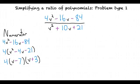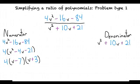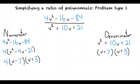So what do we do about the denominator? In regards to the denominator, the next step will be to factor it out. v² + 10v + 21 can be factored out to (v + 7)(v + 3).